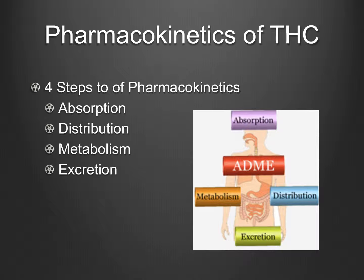There are four primary steps to pharmacokinetics: absorption, distribution, metabolism, and excretion. It is important to see how the compounds of cannabis are processed by our bodies in order to fully grasp and understand how glucose metabolism can be affected by THC or any of the cannabis constituents.